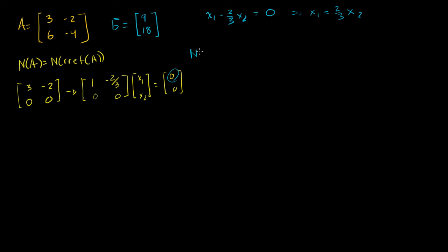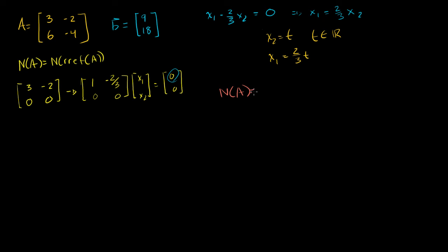If we wanted to write the null space of A, just to show that x2 isn't some special number, let's say x2 is equal to t, where t is some real number. Then x1 is equal to 2/3 times t. So the null space of A is the set of all x1, x2's equal to some real number t times the vector 2/3, 1.